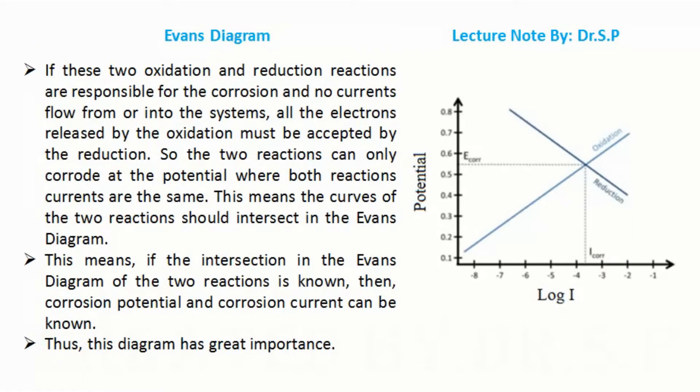If these two oxidation and reduction reactions are responsible for the corrosion and no currents flow from or into the system, all the electrons released by the oxidation must be accepted by the reduction. So the two reactions can only corrode at the potential where both reaction currents are the same. This means the curves of the two reactions should intersect in the Evans diagram.